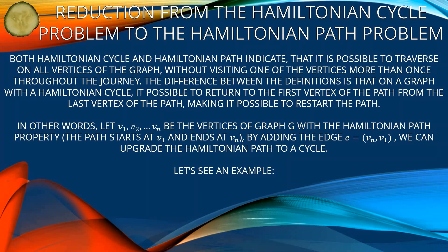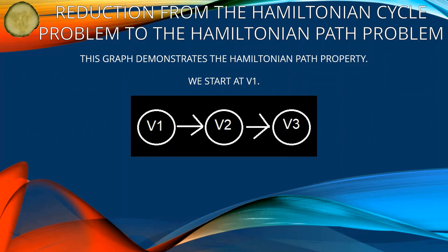In other words, let v1, v2, ..., vn be the vertices of graph G with the Hamiltonian path property. The path starts at v1 and ends at vn. By adding the edge (vn, v1), we can upgrade the Hamiltonian path to a Hamiltonian cycle.